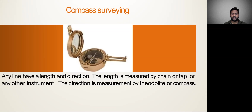What is compass surveying? What is the difference between chain survey and compass survey? In previous classes we learnt about chain survey, where we took horizontal measurements with the help of chain or tape. But any line has both length and direction. In previous classes we only measured the length, but we did not measure the direction. With the help of this compass, we can measure that direction.